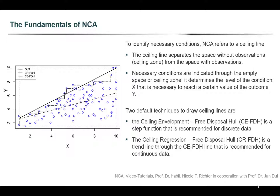But how does necessary condition analysis actually identify a necessary condition? Necessary condition analysis refers to a ceiling line. The ceiling line separates the space without observations from the space with observations. Necessary conditions are then indicated through the empty space or ceiling zone. It basically determines the level of the condition that is necessary to reach a certain value of the outcome. In contrast to regression analysis, the ceiling line is not drawn through the middle of the data points but on top of the data. There are two default techniques to draw ceiling lines: the CEFDH step function, recommended for discrete data, and the CRFDH ceiling line, which is a trend line through the CEFDH line, recommended for continuous data.